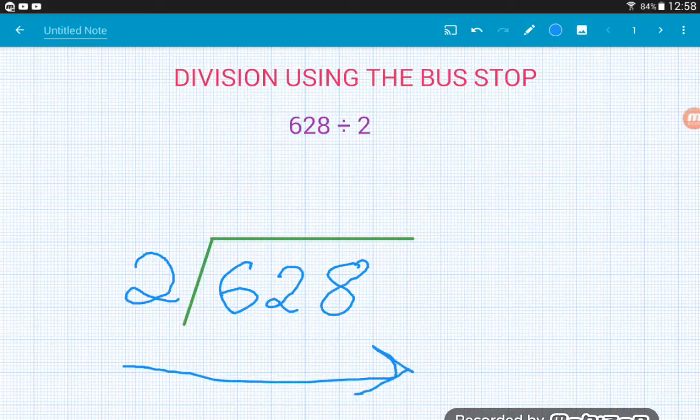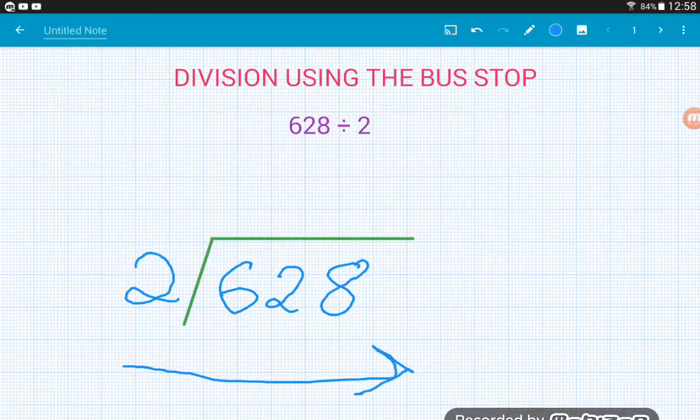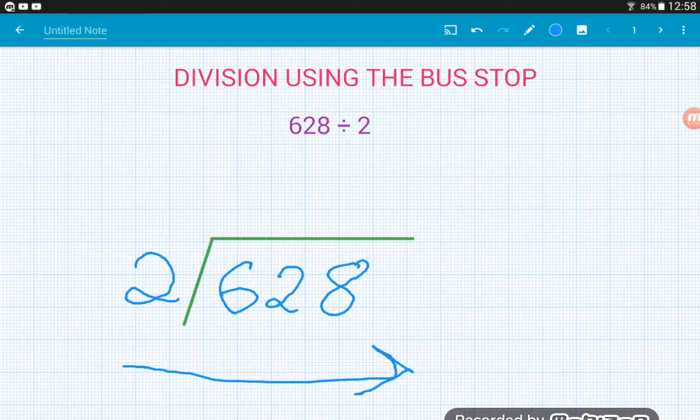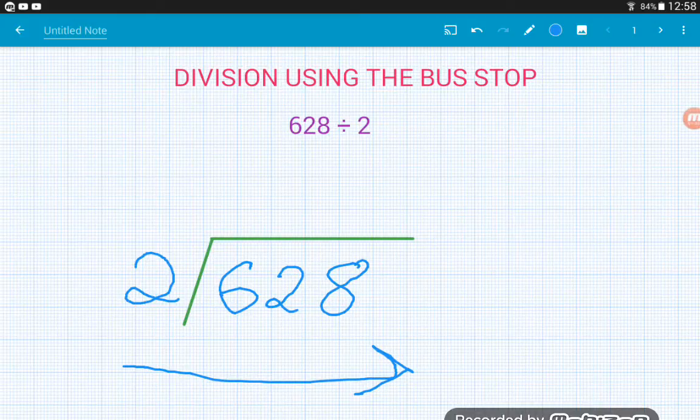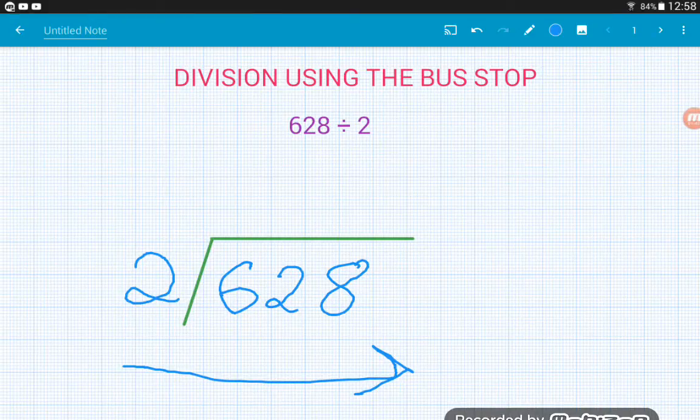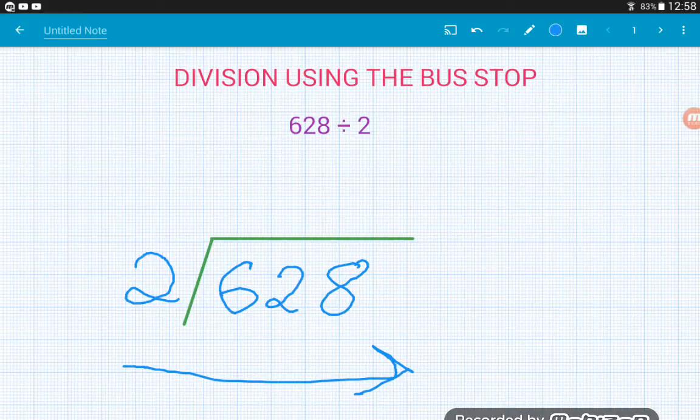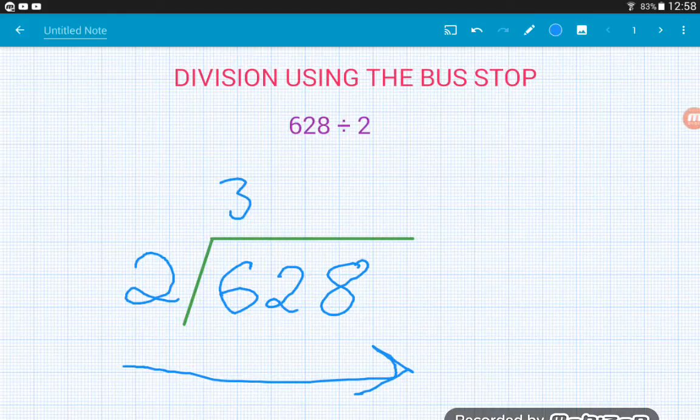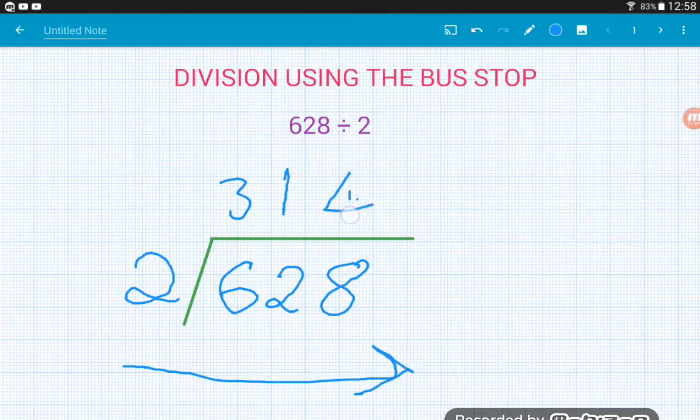Division is pretty much the only operation where you work from the left to the right. Addition and subtraction you always work from right to left. Multiplication really depends on what method you're using. So division, we work from left to right, very important. Then we just work across and ask how many times does 2 go into 6, which would be 3 times, so we write a 3 up above. How many twos are in 2? It's 1. And then how many twos are in 8? It's 4. So 628 divided by 2 is 314.